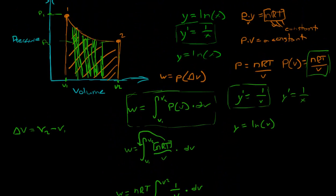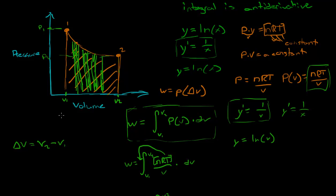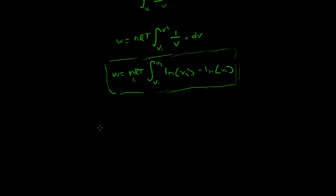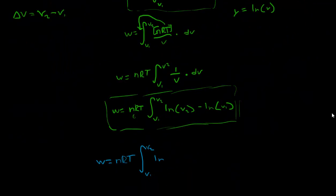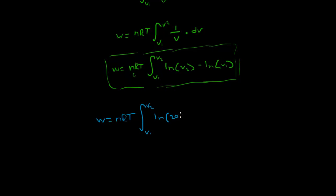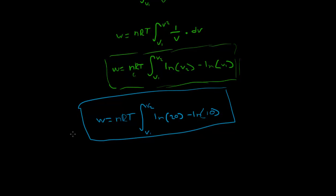To make this clear with specific values: if V1 equals 10 and V2 equals 20, then to calculate the work we substitute these values in. Work equals nRT times the natural log of V2 — which was 20 — minus natural log of V1, which was 10. So we do ln of 20 minus ln of 10, and this calculates the work under the curve.